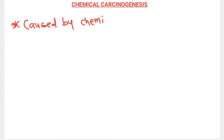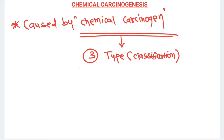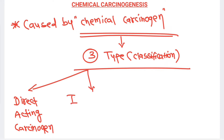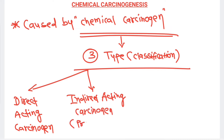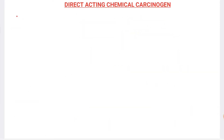Today we will learn about chemical carcinogenesis. The name itself suggests it means cancer caused by chemical carcinogens. Chemical carcinogens can be divided into three groups: first, direct acting carcinogens which don't require metabolic conversion; second, indirect acting carcinogens, also known as pro-carcinogens, because they require metabolic conversion; and third, natural plant and microbial products.